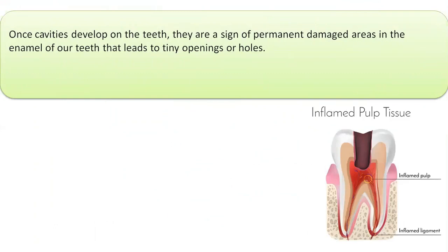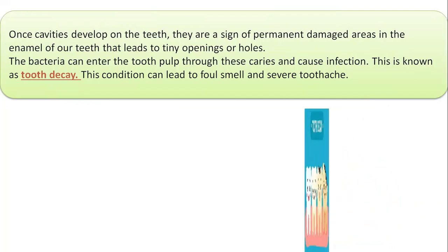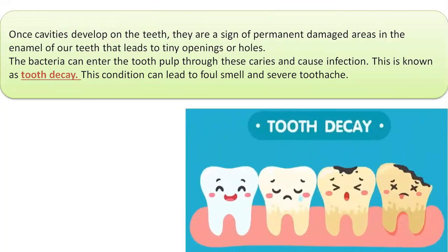Once cavities develop on the teeth, they are a sign of permanent damaged areas in the enamel, and that leads to tiny openings or holes. The bacteria can enter the dentine and tooth pulp region through these caries and cause infection. This is known as tooth decay.